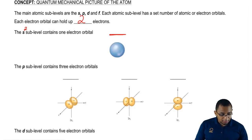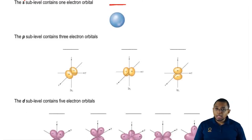The P sublevel has three electron orbitals, each one can hold up to two, so we have six maximum in the P sublevel.